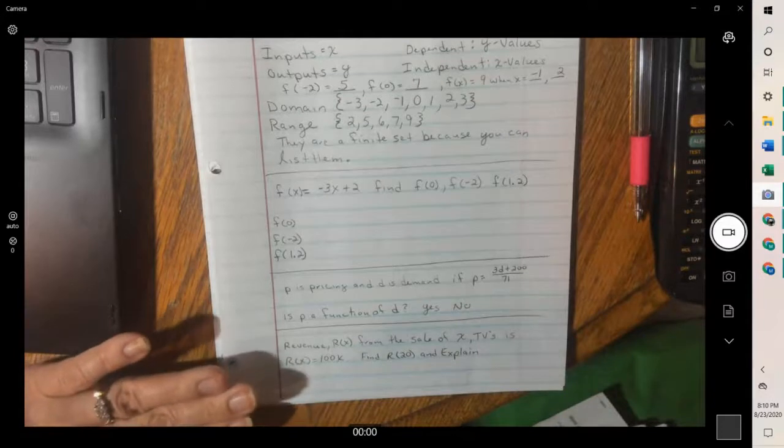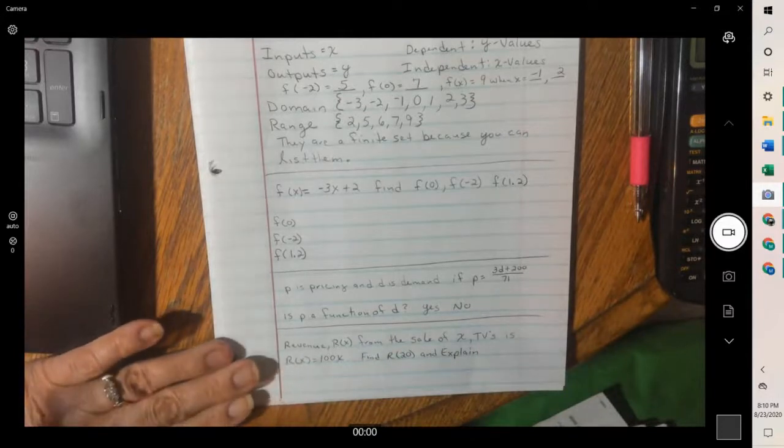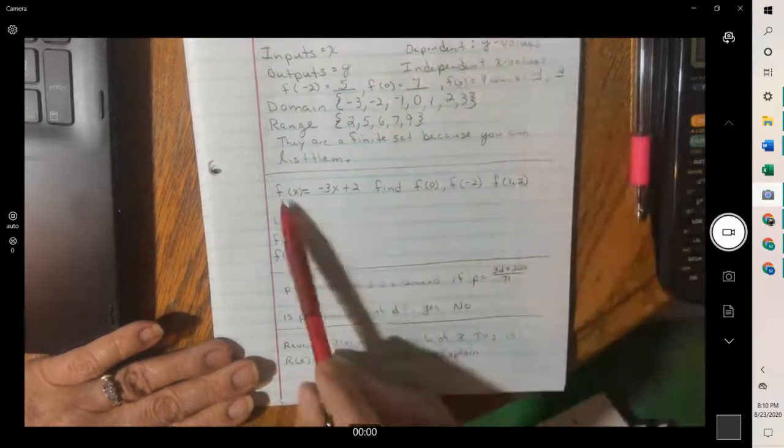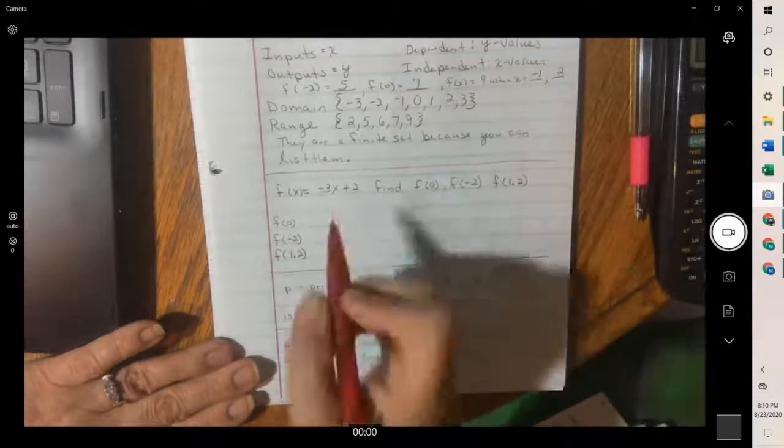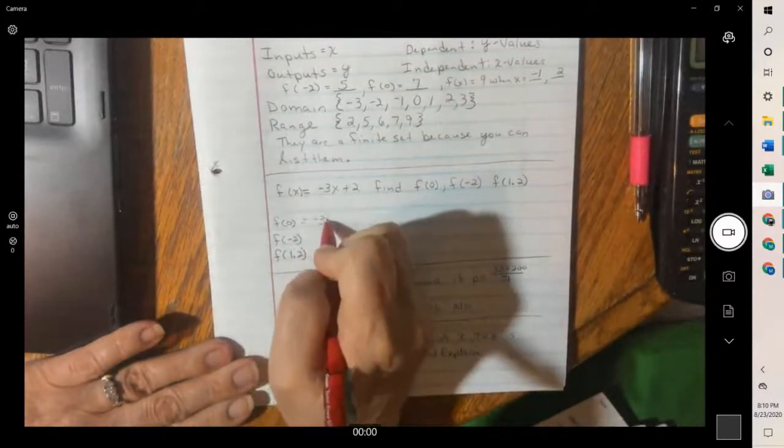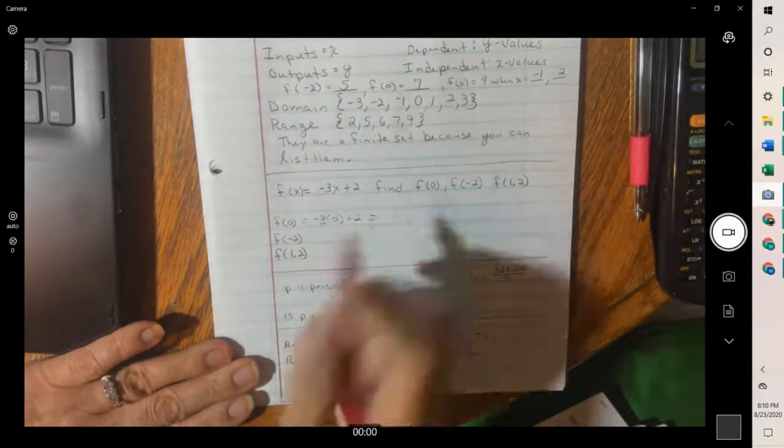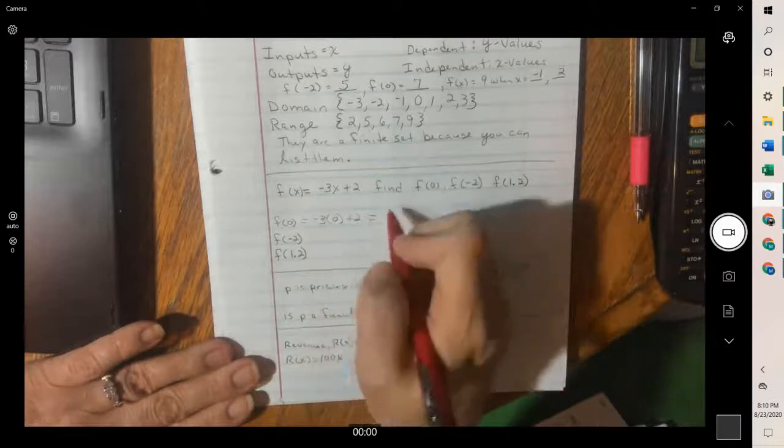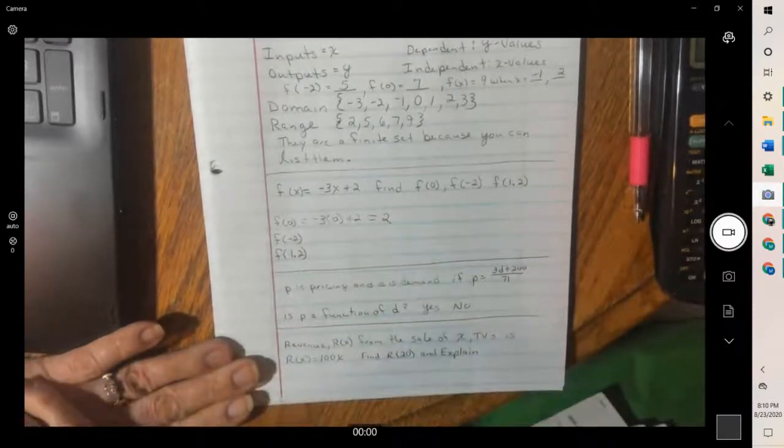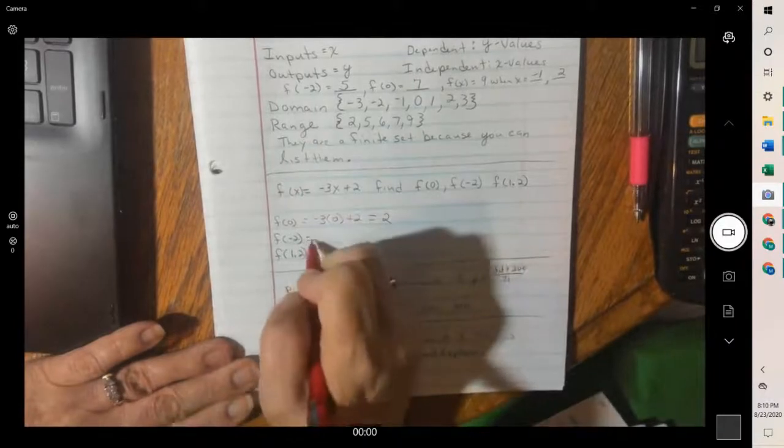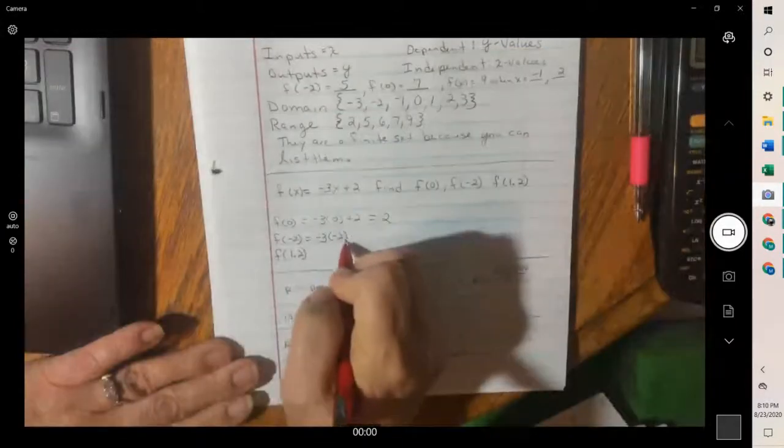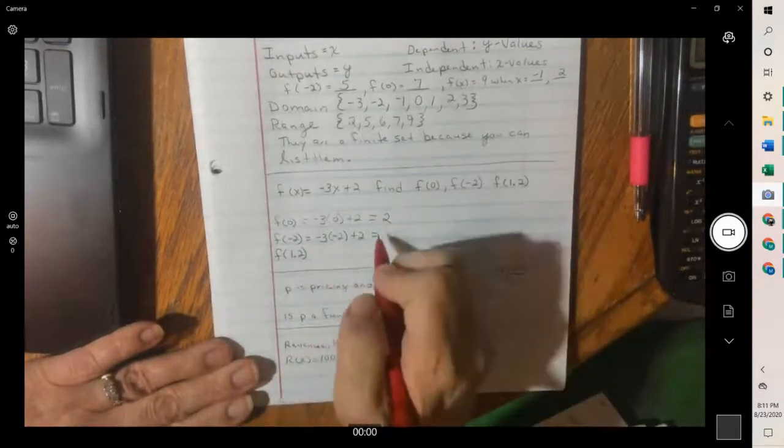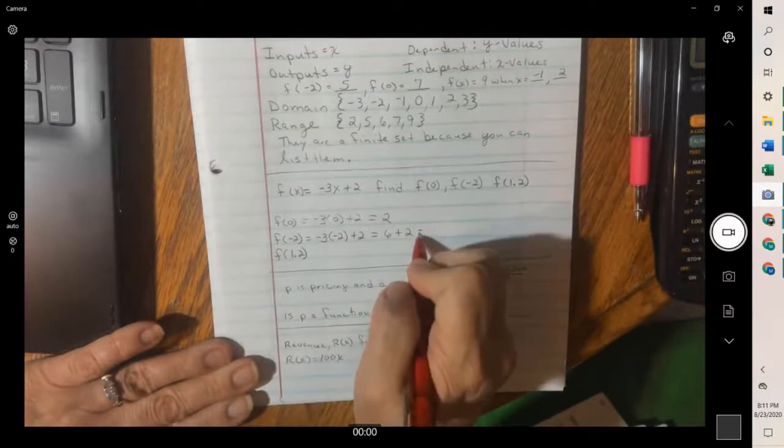So f of x equals negative three x plus two. And we want to just plug in some values. So if we do not have a table, we can still find the values by plugging it in here. Like the first one, we would just plug in zero wherever there's an x. And then negative three times zero is zero plus two is two. And plug in a negative two. Negative three times negative two is six plus two is eight.